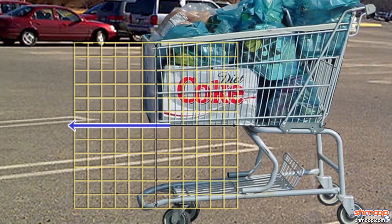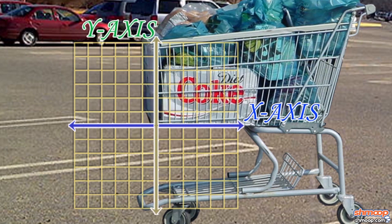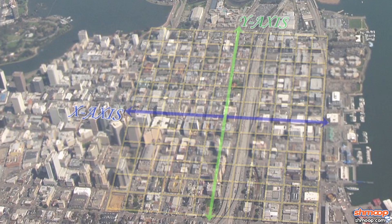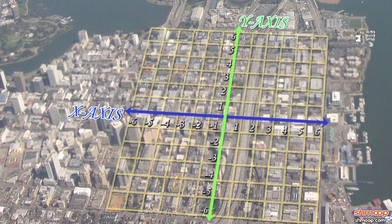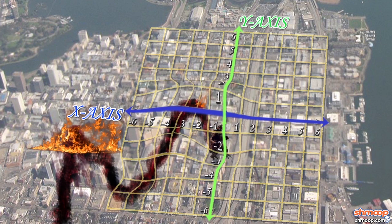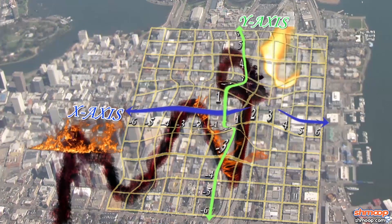Here's the X coordinate of the cart, and here's the Y. And this is a Cartesian grid over the city that Godzilla, and well, disaster movies in general, seem to hate.